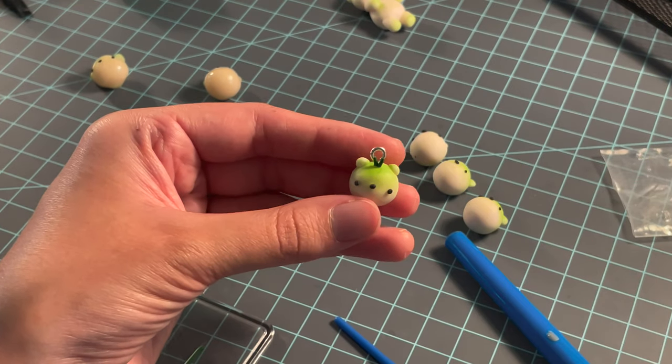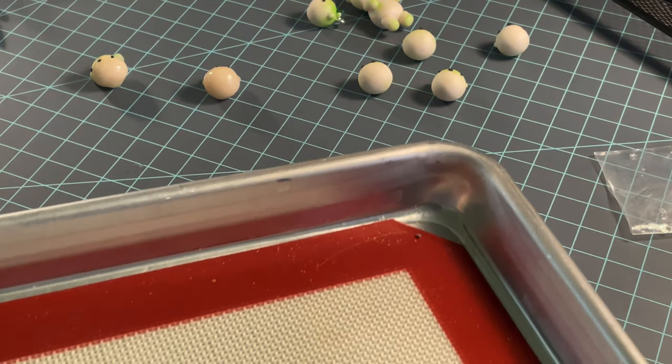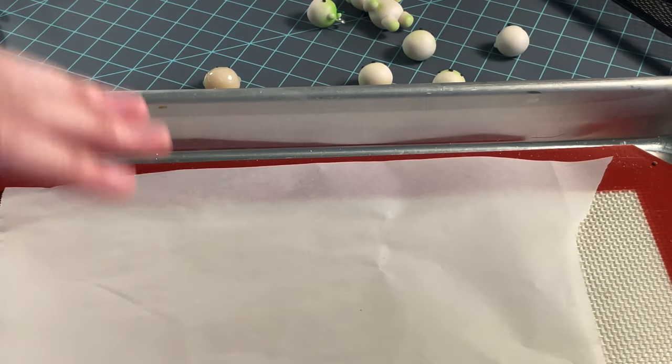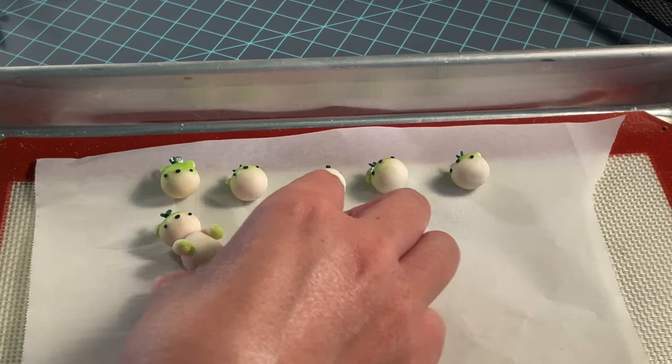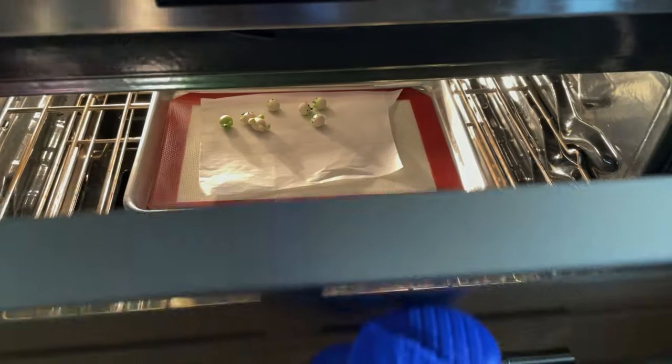Then it is time to bake them. These ones are made out of old translucent polymer clay, so they only needed 15 minutes in the oven at 275 degrees Fahrenheit.